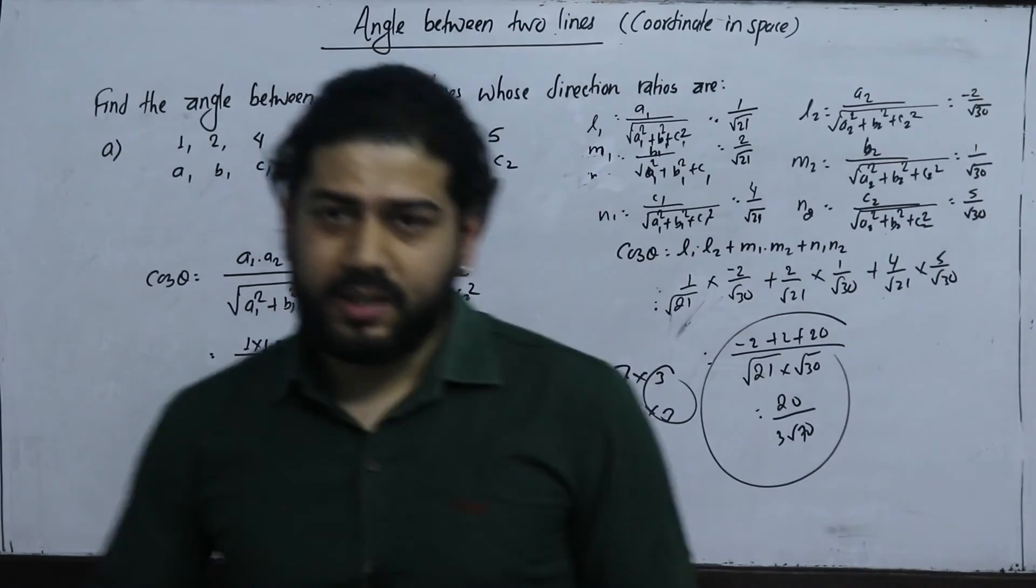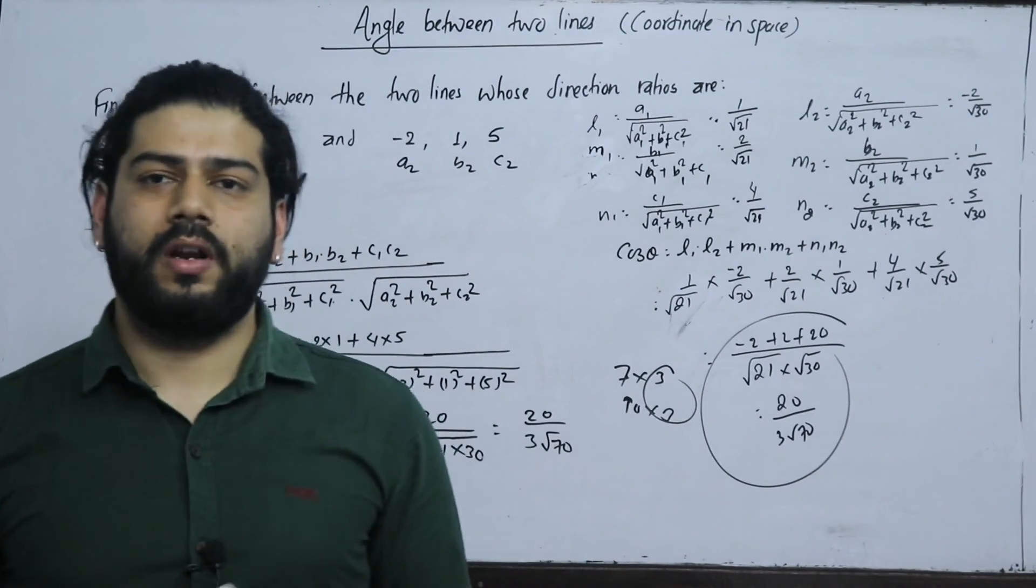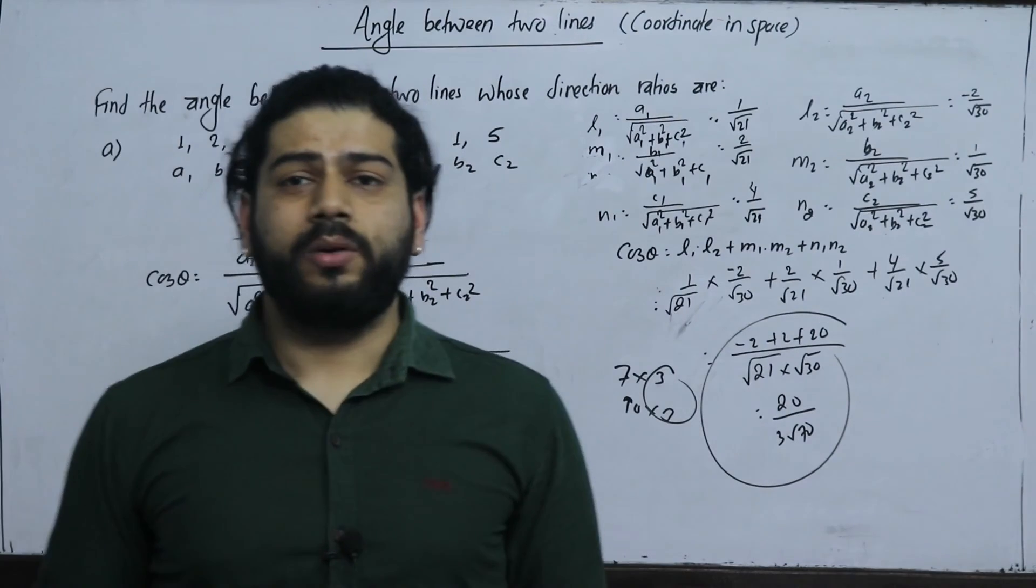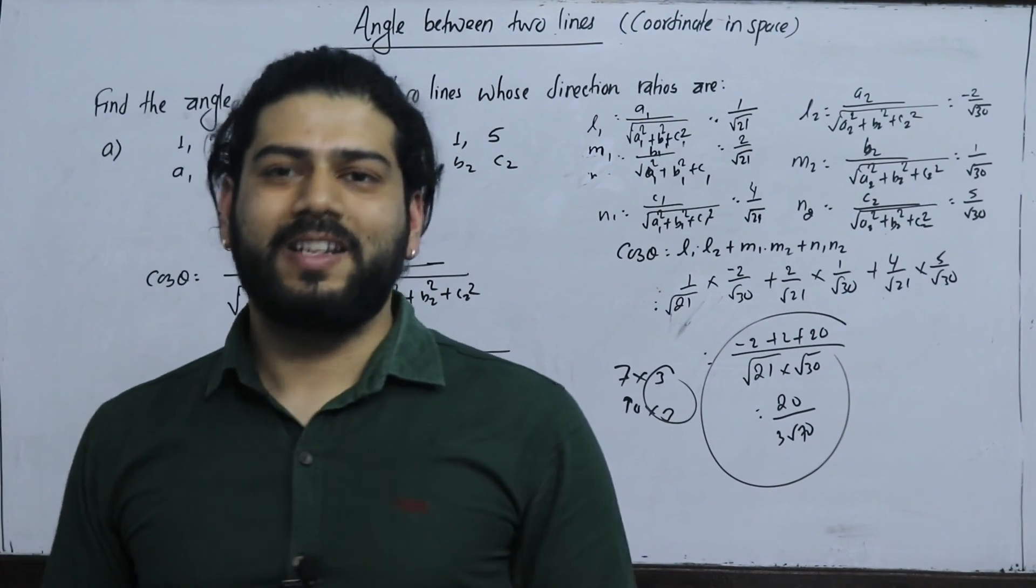This is the direction ratio or direction cosine method. This is the angle between two lines. See you in the next class.